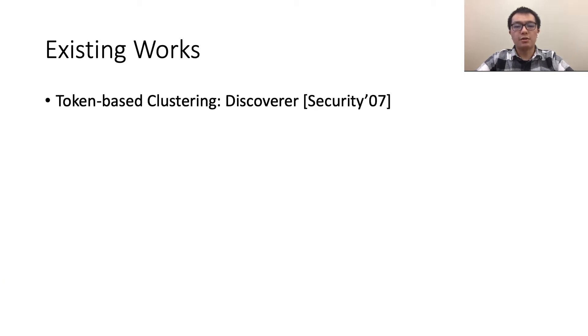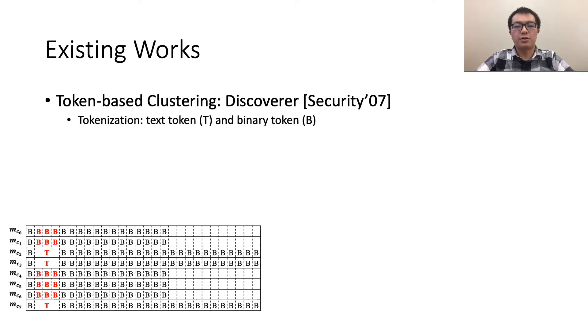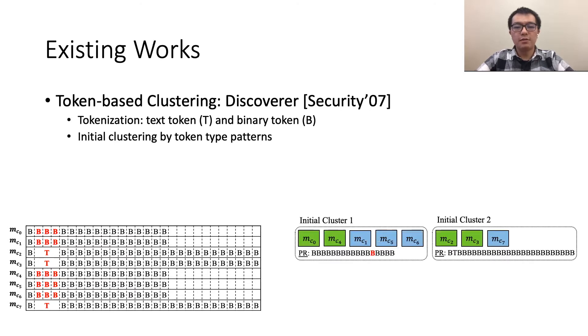The second method is token-based clustering. The representative is Discoverer. It first tokenizes messages based on the value of each byte to reduce the variations. Token B denotes a binary byte and T denotes a text string. Then it conducts initial clustering by the token type patterns. In this example, it observes two different token patterns and produces two initial clusters. Since messages of different types may have the same token patterns, Discoverer further divides initial clusters into sub-clusters by identifying format distinguished tokens.